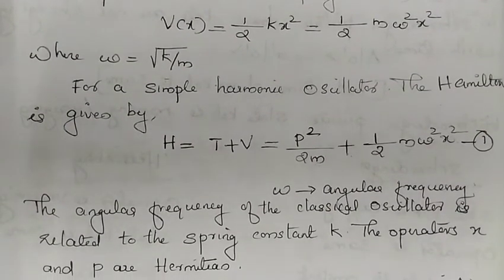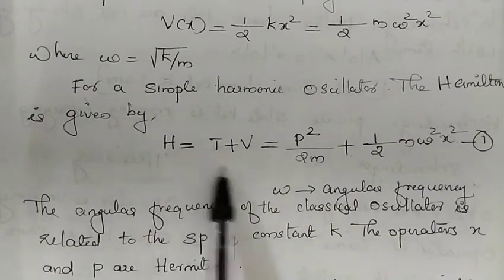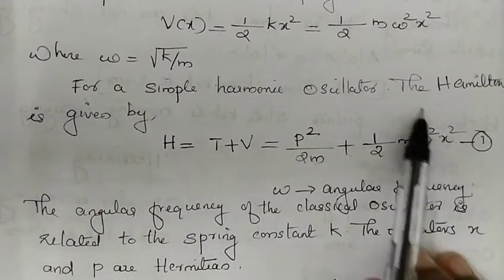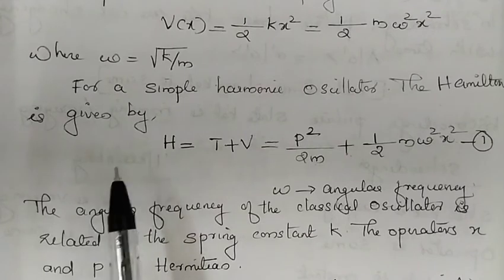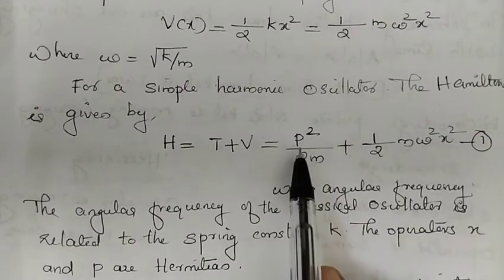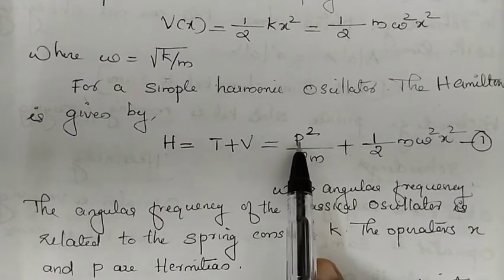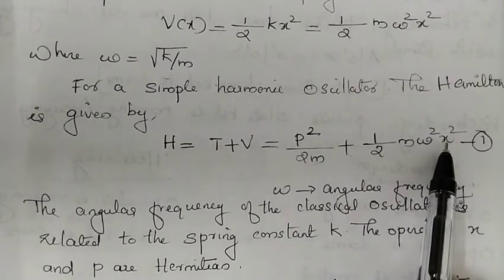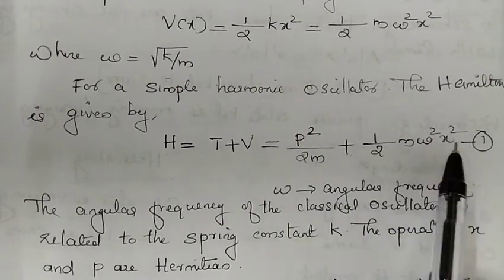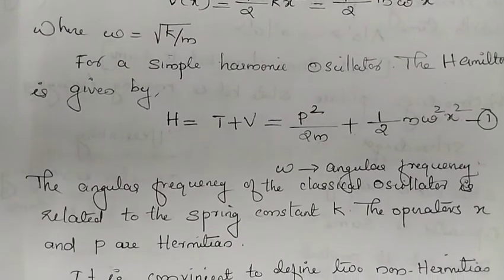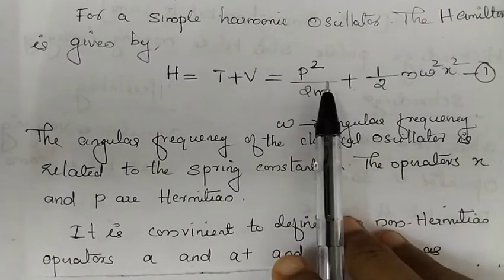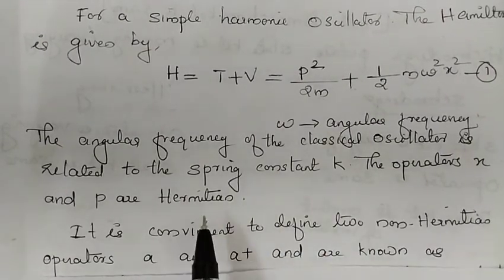The quantum mechanical treatment replaces the classical Hamiltonian. In the quantum mechanical system, p and x are the position and momentum operators, and these operators x and p are Hermitian. Therefore the Hamiltonian is also a Hermitian operator.